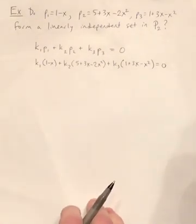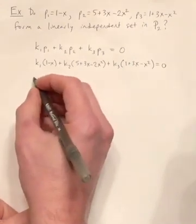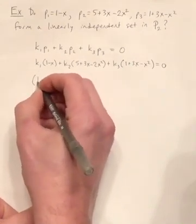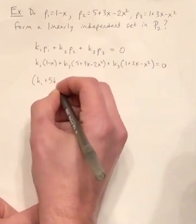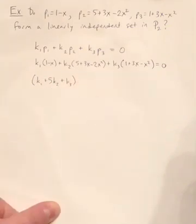but regroup it by those terms. So if I were to write all the constants, I'm going to have K1 from the first one, 5K2 from the second, and K3 from the third.